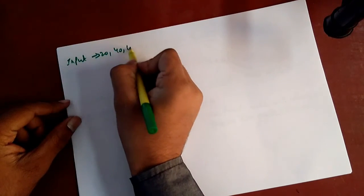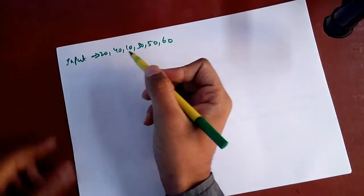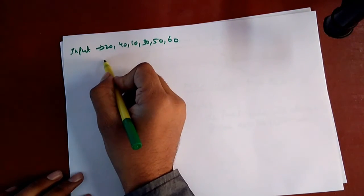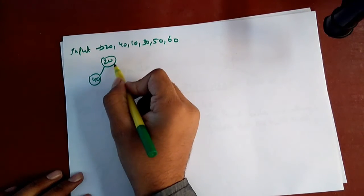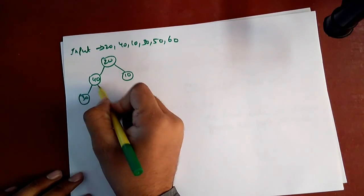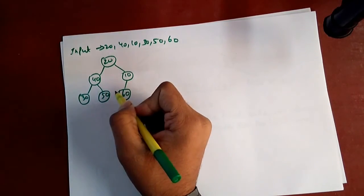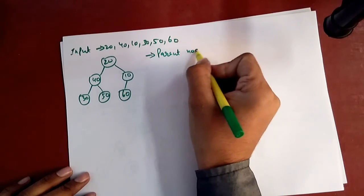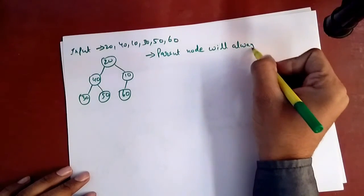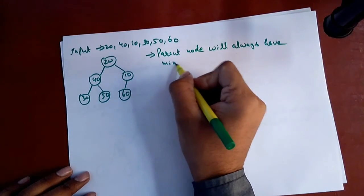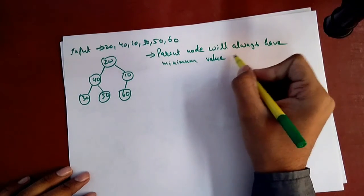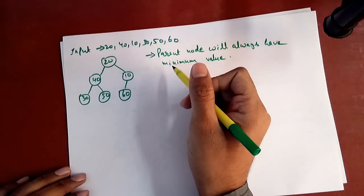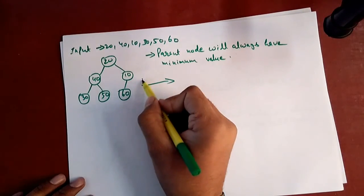Let's see how to create a minimum heap. We will take the same input: 20, 40, 10, 30, 50, 60. Before creating a minimum heap, we will first create a normal heap. The key point to keep in mind is that the parent node will always have the minimum value. The rest of the conditions are similar to that of max heap.